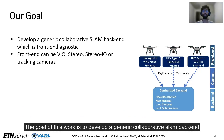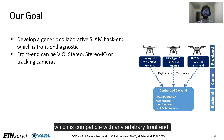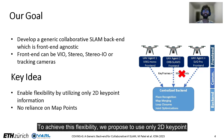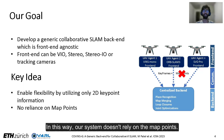The goal of this work is to develop a generic collaborative SLAM backend which is compatible with any arbitrary frontend. To achieve this flexibility, we propose to use only 2D keypoint information for performing all computations in the backend. In this way, our system doesn't rely on map points whose quality varies largely across different agents.